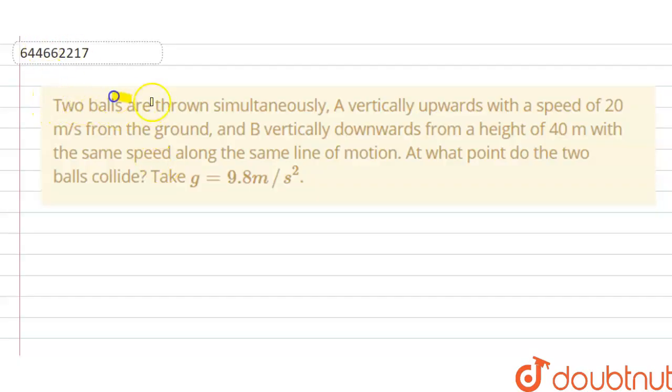Two balls are thrown simultaneously. A vertically upward with a speed of 20 meters per second from the ground, and B vertically downward from a height of 40 meters with the same speed along the same line of motion. At what point do the two balls collide? Take g = 9.8 m/s².